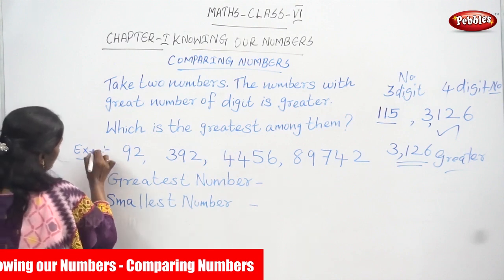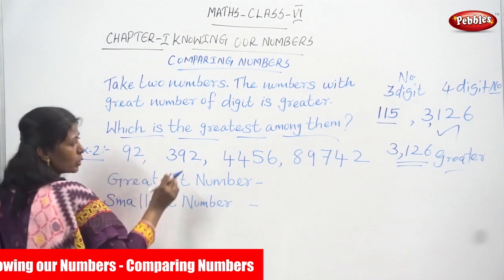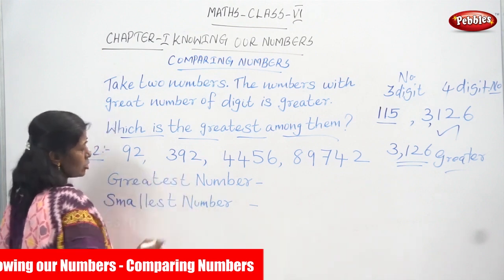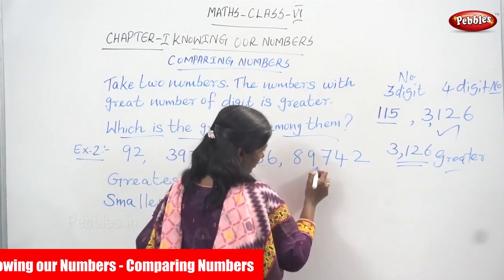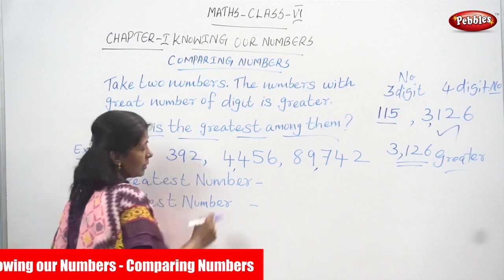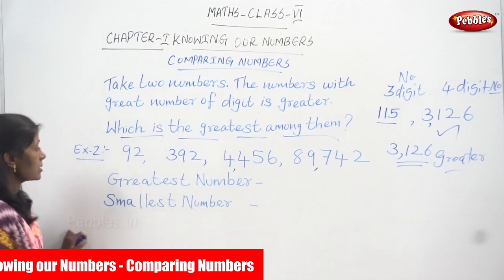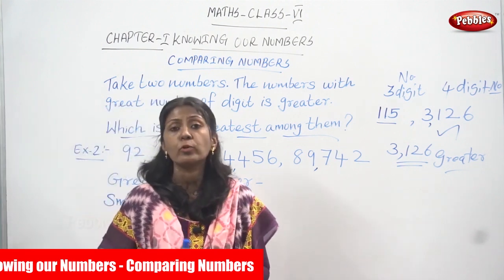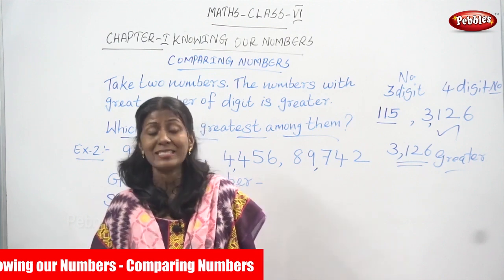Now for example two: here four numbers are given. The first number is ninety-two. The second number is three hundred and ninety-two. The third number is four thousand four hundred and fifty-six. The fourth number is eighty-nine thousand seven hundred and forty-two. You have to find out which is the greatest and which is the smallest number. To find the greatest number, you must consider the number of digits. First, count the number of digits in each number.